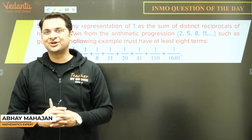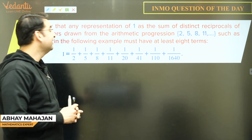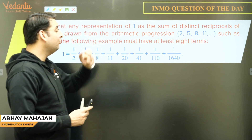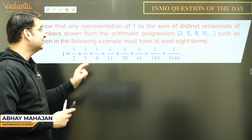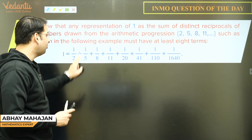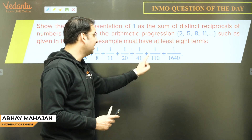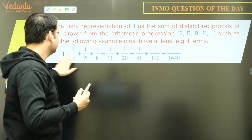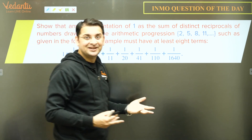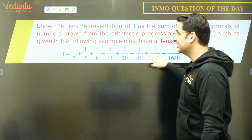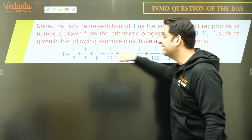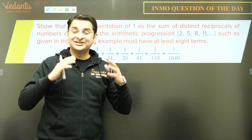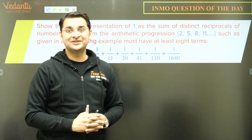Hi all, this is Abhay Mahajan and I welcome you all to this series called IMO Question of the Day. The question for today is: show that any representation of 1 as the sum of distinct reciprocals of numbers drawn from the AP 2, 5, 8, 11, and so on — such as 1/2 + 1/5 + 1/8 + 1/11 + 1/20 + 1/41 + ... — must have at least 8 terms. You can pause this video and solve it yourself before resuming for the hint.